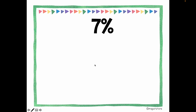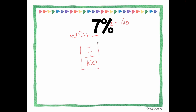Pause the video and try to rewrite this percent as a fraction. Remember: the digits before the percent symbol will always be your numerator. So it will be 7, and the percent means out of a hundred — so 7 over 100. Now I stop and think: is it possible to simplify this fraction? No — this is its simplest form. I cannot continue simplifying, so this is my final answer.